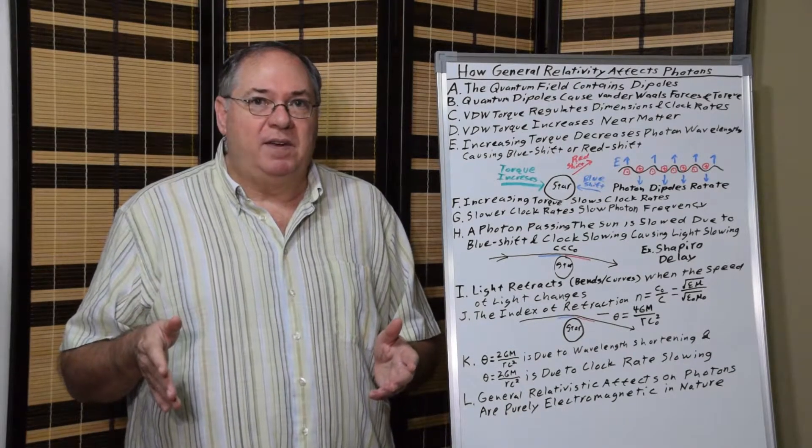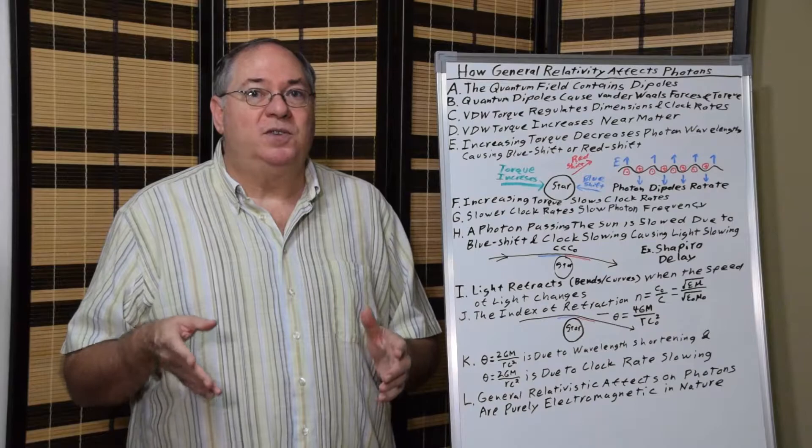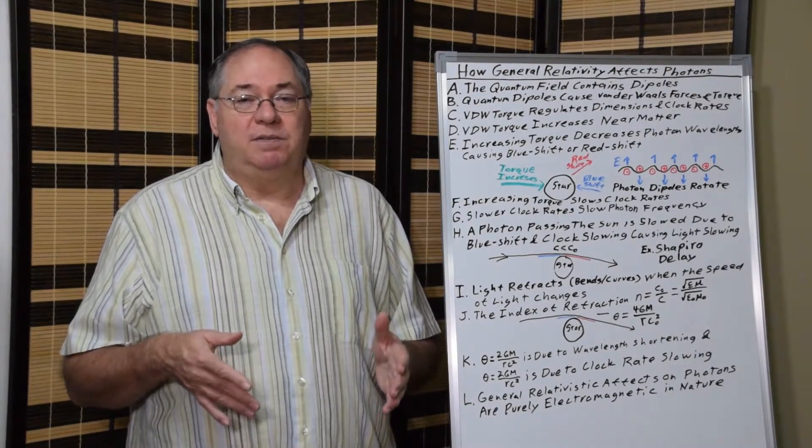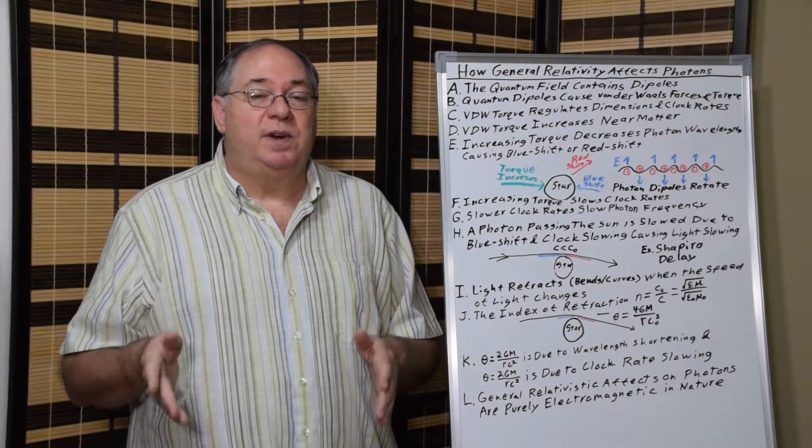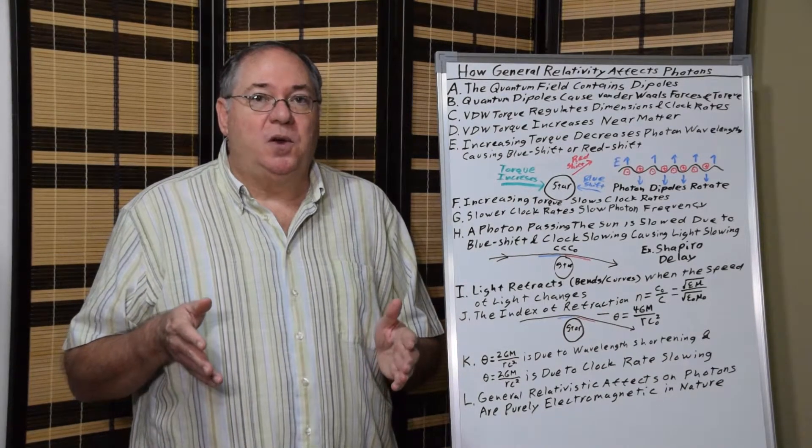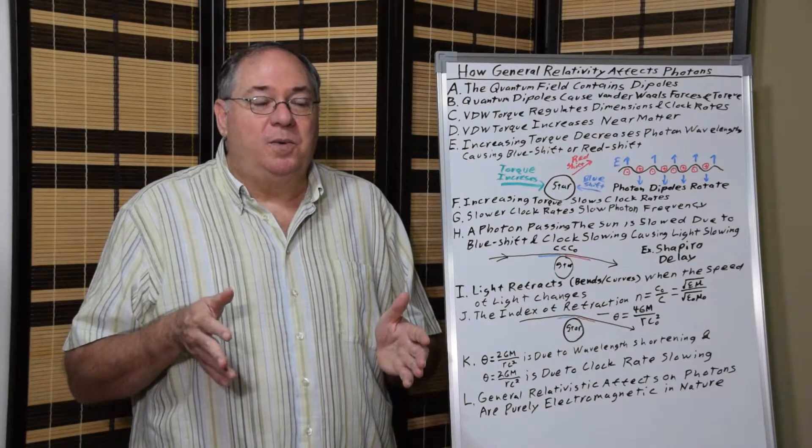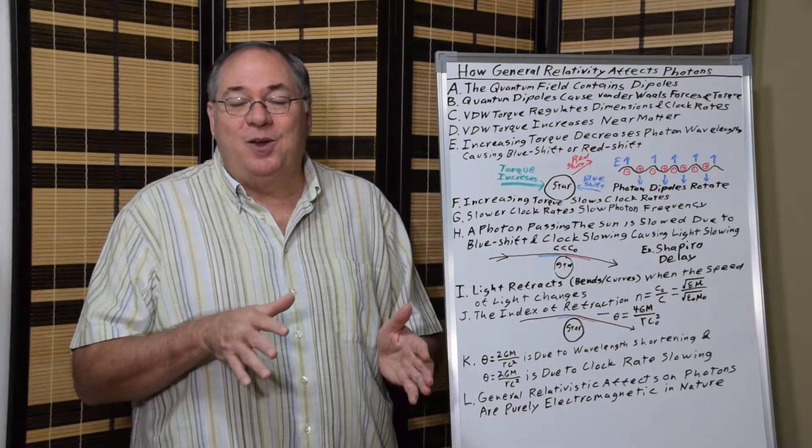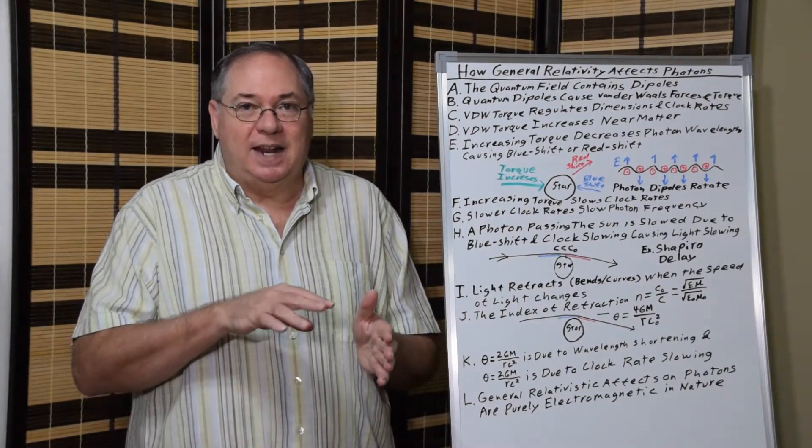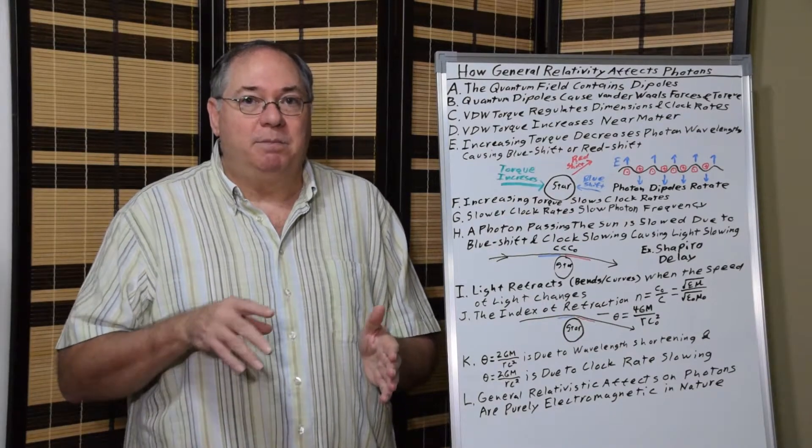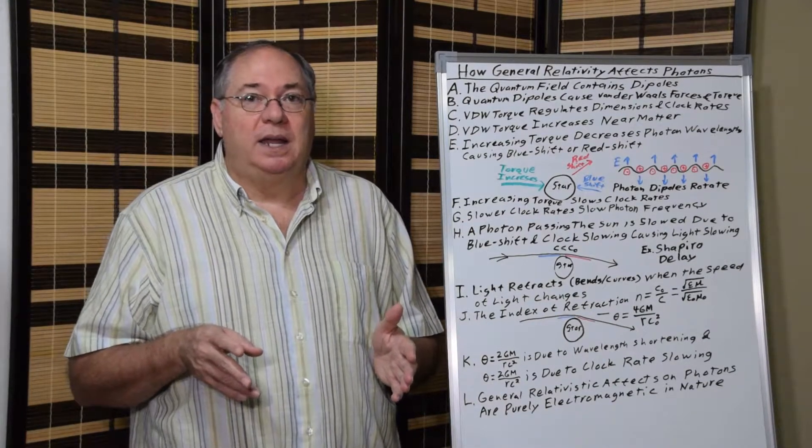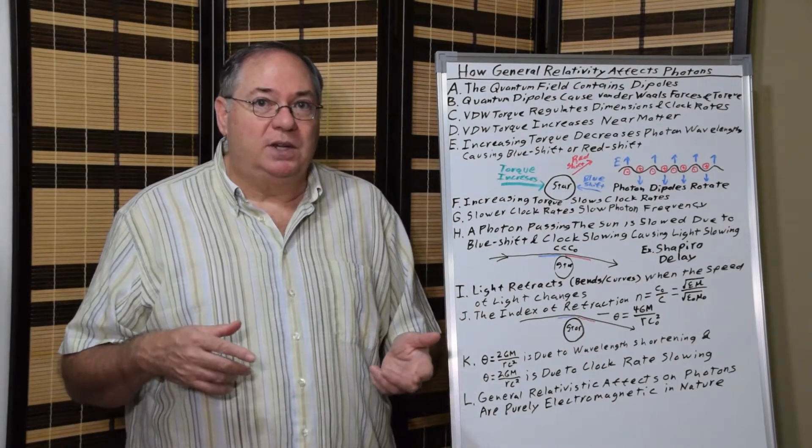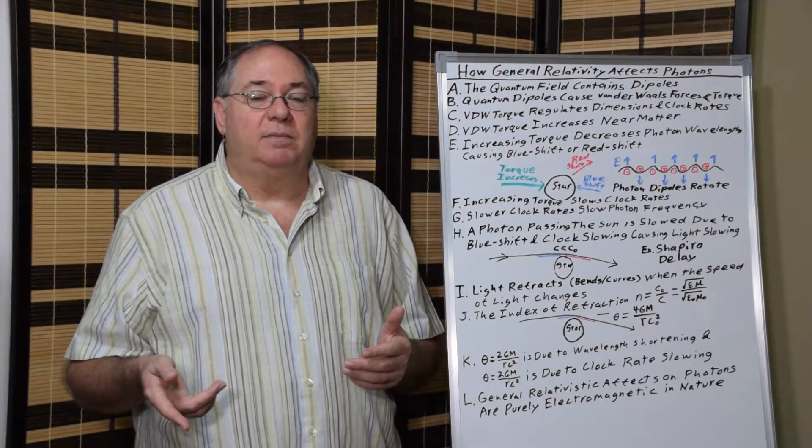We can measure that even at smaller distances in experiments. So this has the effect of having an additional slowing on light. The clock rate slowing, which is due to the van der Waals torque, slows the frequency. So light, even though from the perspective of the photon it doesn't really know that its frequency is reduced, that it's getting fewer cycles per second because of the quantum van der Waals torque, it does.